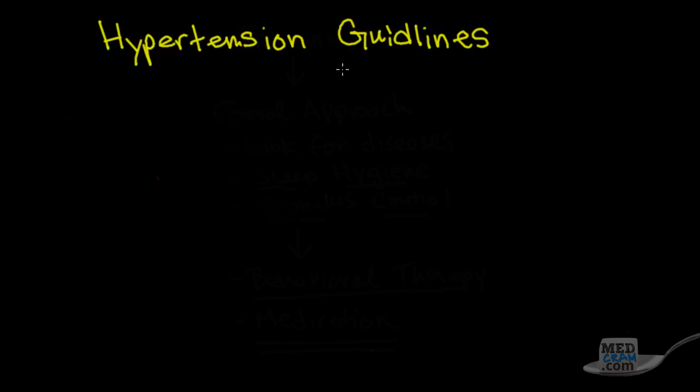The first thing I want to do is give you a sense about what's happened between these two periods of time. To do that, I'm going to split the screen into two areas. On the left, we're going to have JNC7, and we're going to have the 2017 guidelines here on the right.